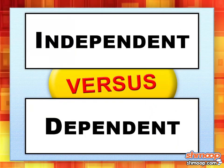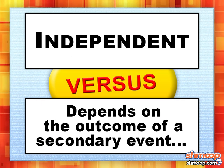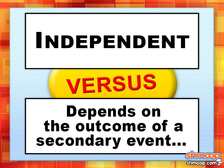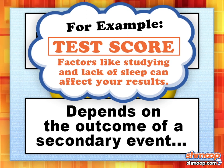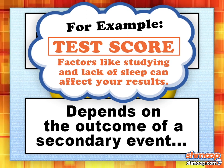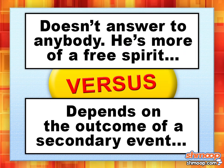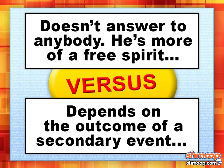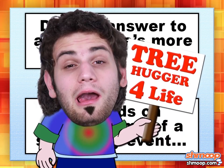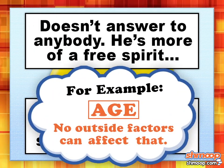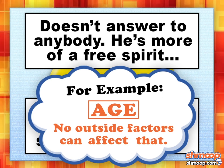Before we start, let's define what makes an event independent or dependent. A dependent event depends on the outcome of a secondary event. A good example of that is a test score, because factors like studying and lack of sleep can affect your results. An independent event doesn't have to answer to anybody — it's more of a free spirit. An example of an independent event is your age, because no outside factors can affect how old you are.